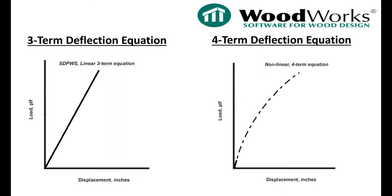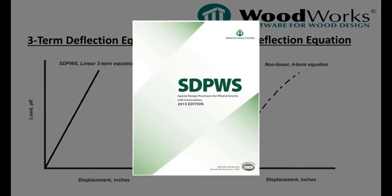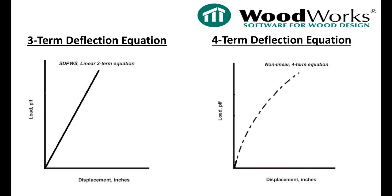The three-term deflection equation has been adapted from the American Wood Council's Special Design Provision for Wind and Seismic Standard, commonly known as SDPWS, and is essentially a linearization of the four-term deflection equation.